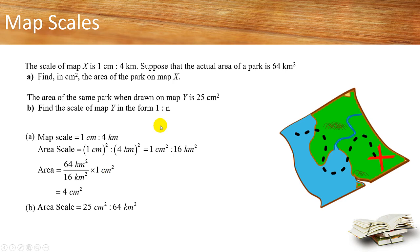So the area scale on map Y will be 25 cm² is to 64 km², because the area remains the same.